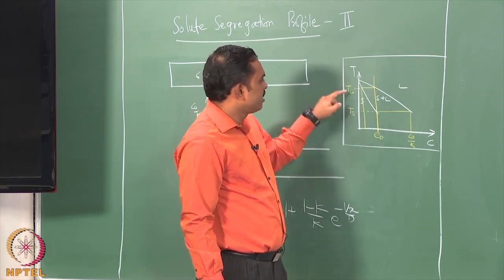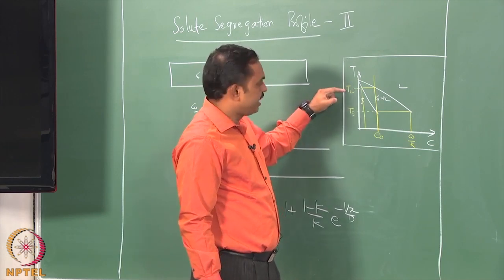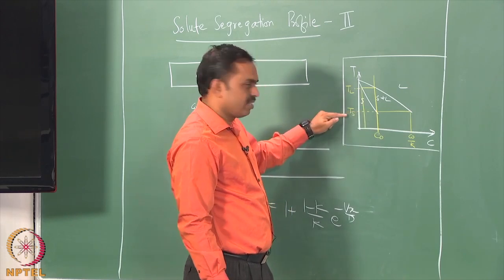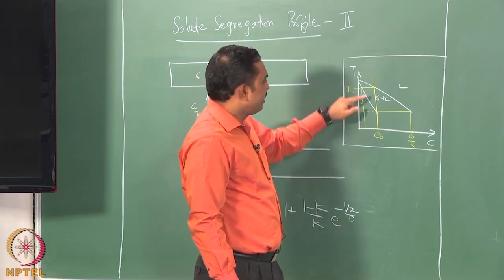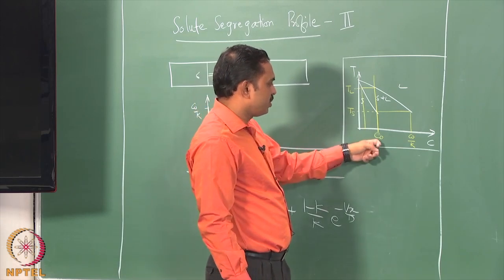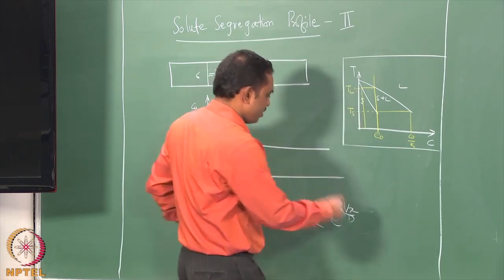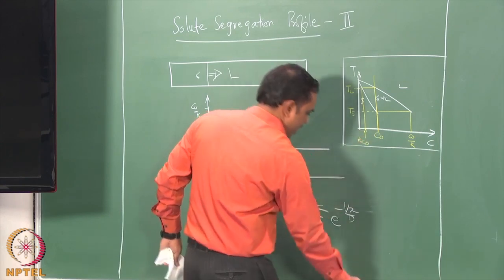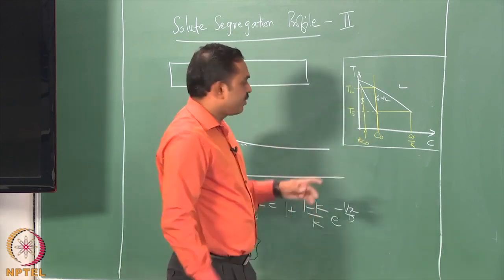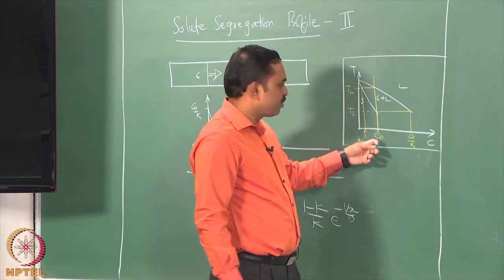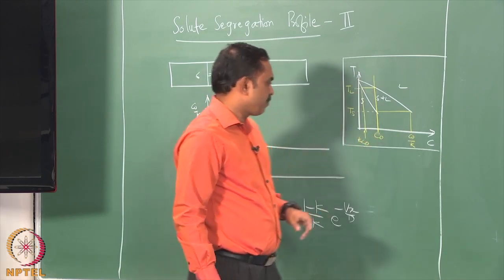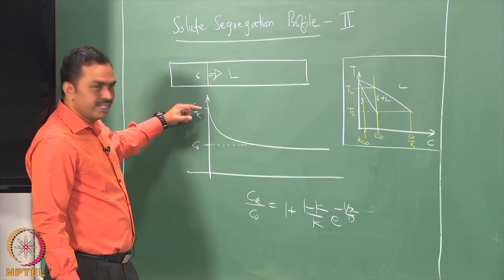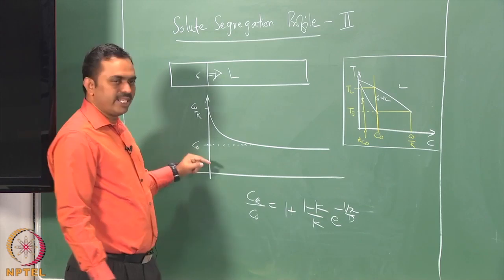Where we hit the liquidus is the temperature we call T_L, and where we hit the solidus we call the solidus temperature. The first solid to form for a composition of C₀ is KC₀, and the last liquid to solidify from an alloy composition of C₀ will be C₀/K. In this profile, the maximum composition at the interface is C₀/K and far away it is C₀.